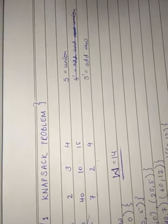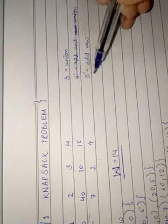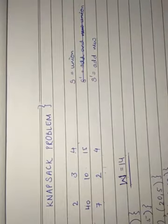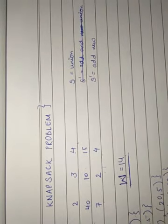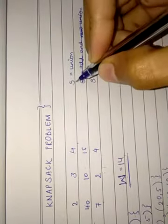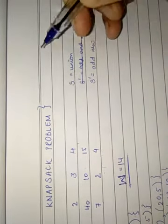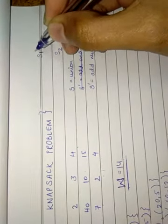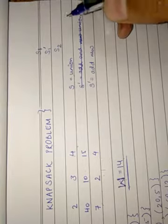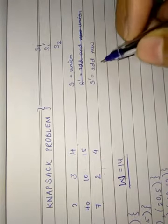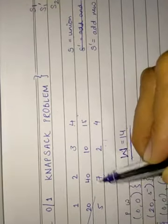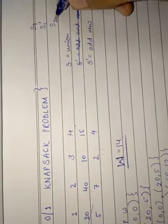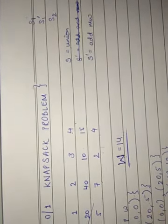In order to find the solution for this problem, we need to first determine the S values until all items are covered. S will equal the number of items. The easiest procedure to find the S and S-dash values is: for finding the S values, we will union the above two S values. For example, if we are finding the value of S2, we will union the values of S1 and S1-dash. And for finding the S-dash value, we just add a new element from the table into the S values. For example, for S-dash-two, we add the new element into the S2 values.